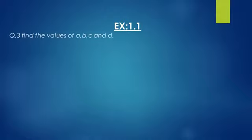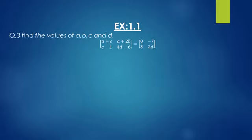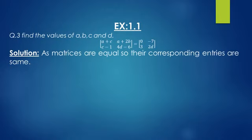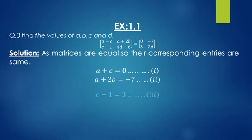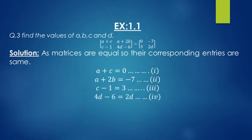Exercise 1.1, Question 3: find the values of a, b, c, and d given that the following matrices are equal: [a+c, a+2b; c-1, 4d-6] = [0, -7; 3, 2d]. Solution: since the matrices are equal, their corresponding entries are the same. So: a+c = 0; a+2b = -7; c-1 = 3; 4d-6 = 2d.